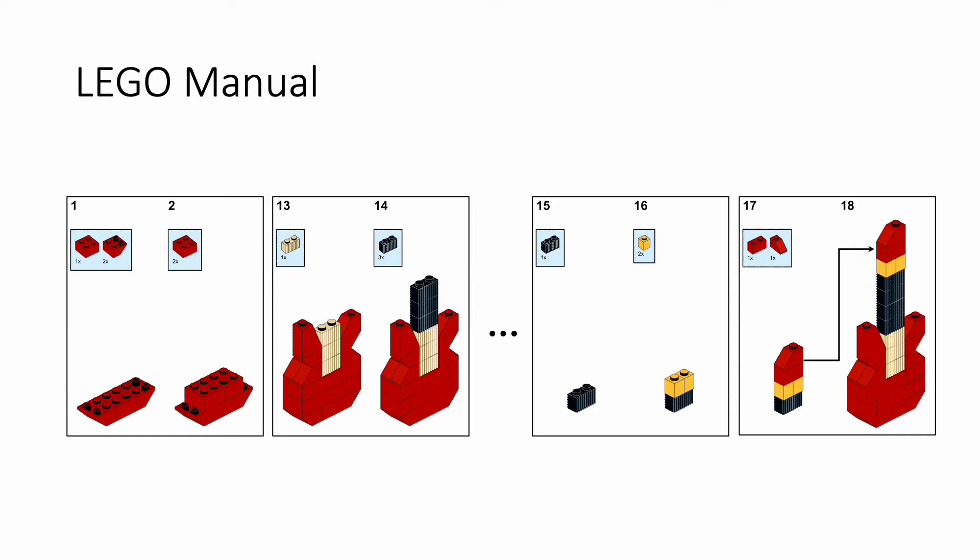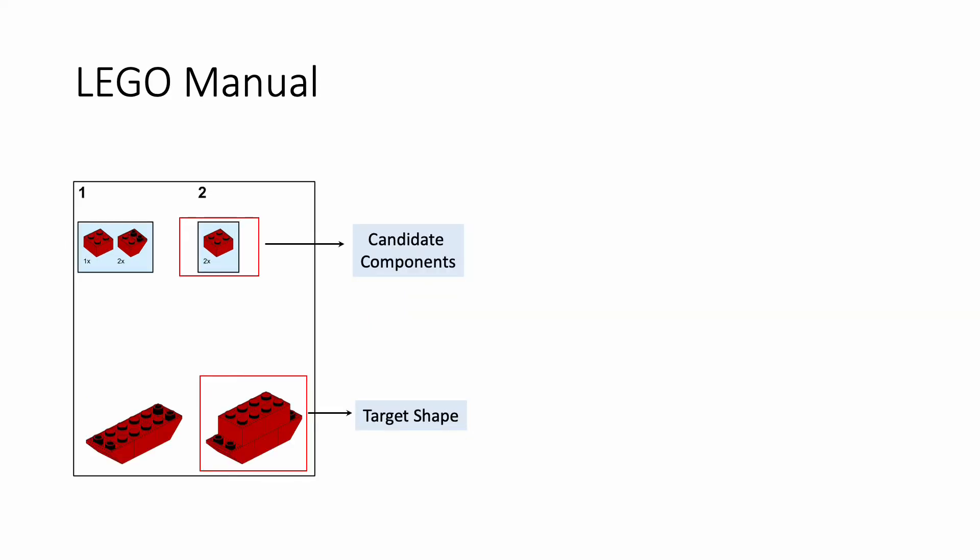Take a LEGO manual as an example. It consists of a sequence of 2D images specifying the assembly process. Here, the images are sampled from a LEGO manual that builds a guitar, with each image containing two steps. In each step, the manual specifies the candidate components to be assembled and the target shape by projecting it to the image plane. In this way, humans can infer the desired 3D poses of the components from the manual image in each step, until we build a final LEGO object.